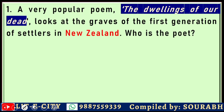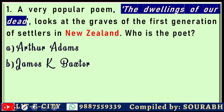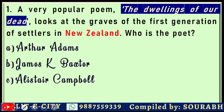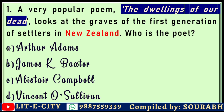The very first question: the poem 'The Dwellings of Our Dead' looks at the graves of the first generation of settlers in New Zealand. Who is the poet? In this poem, the narrator looks at the graves of those persons who came from Europe and settled in New Zealand, and have since passed away. The options are Arthur Adams, James K. Baxter, Alistair Campbell, and Vincent O'Sullivan.